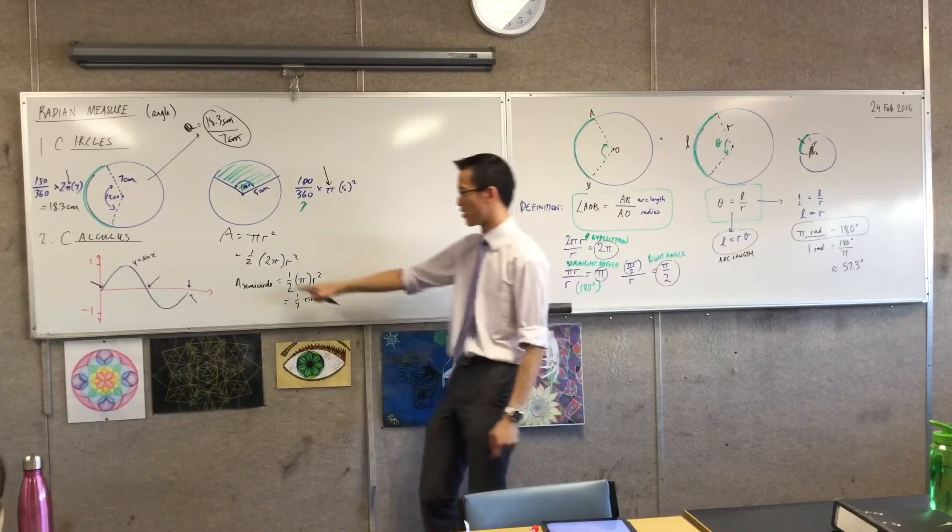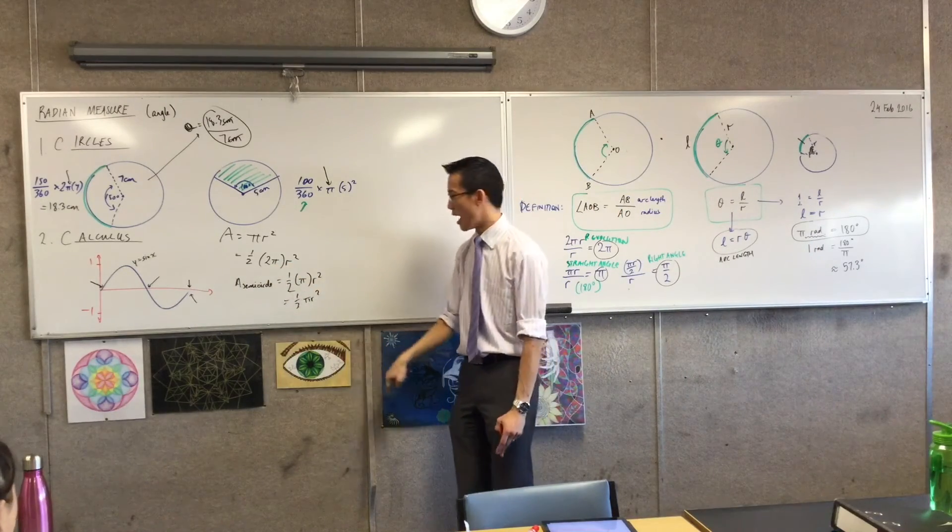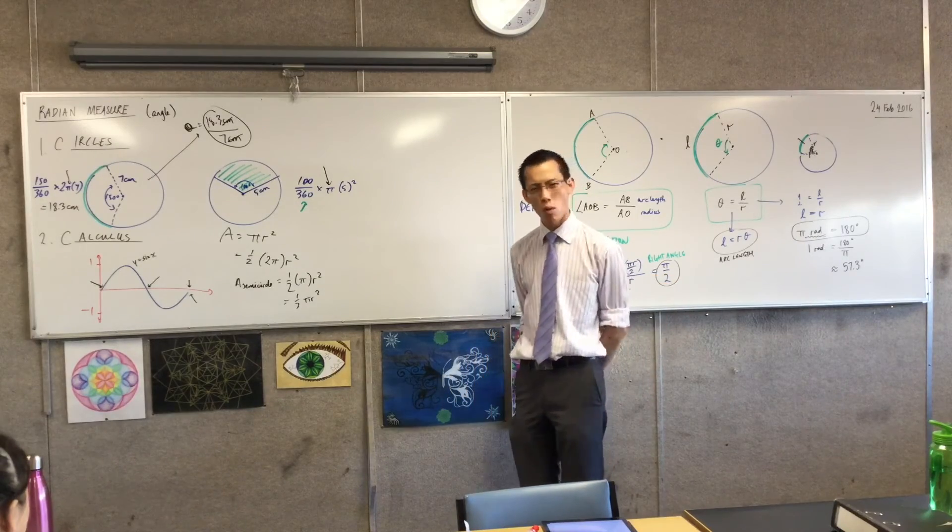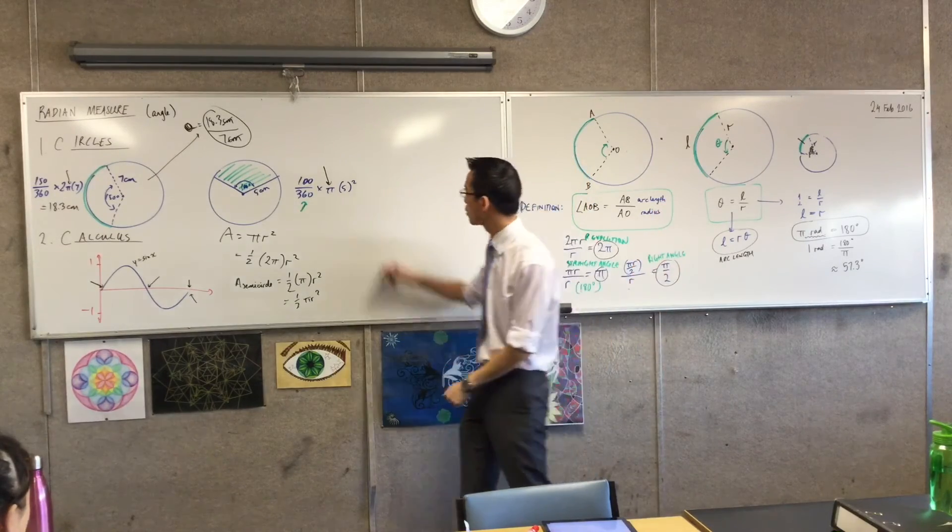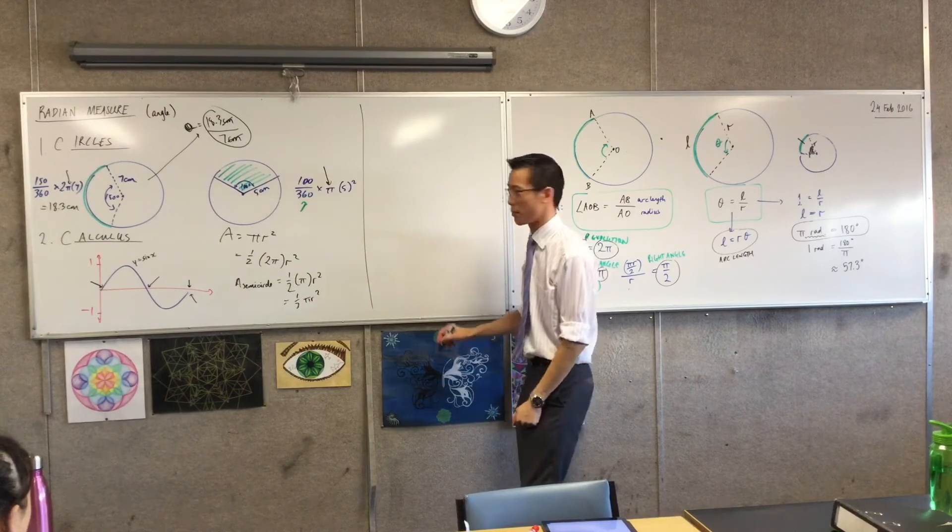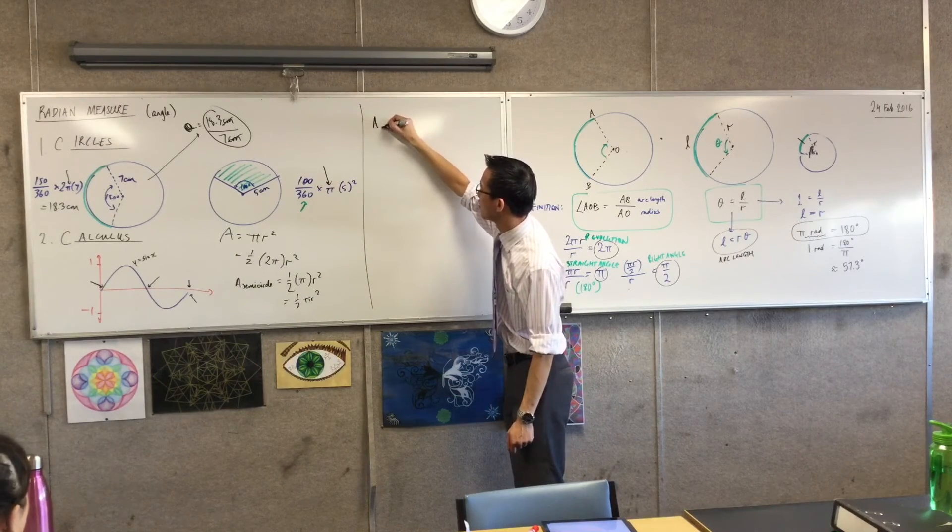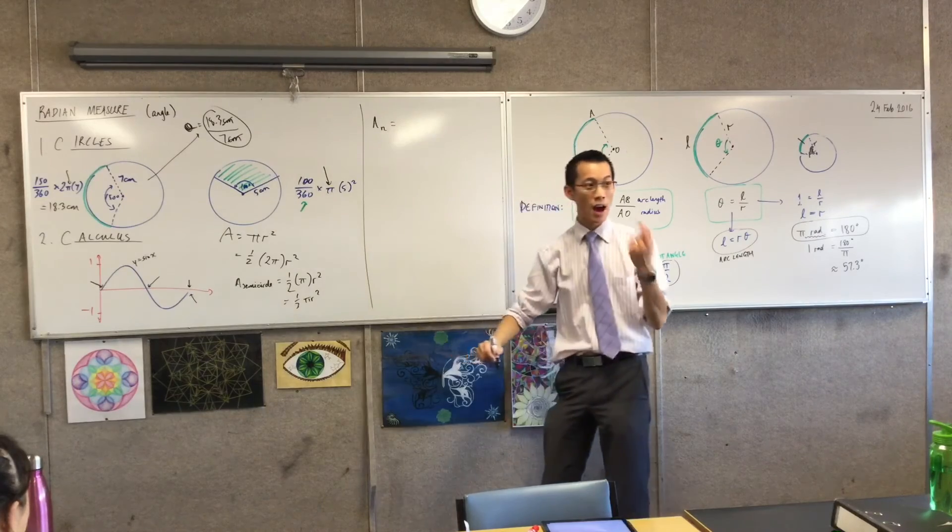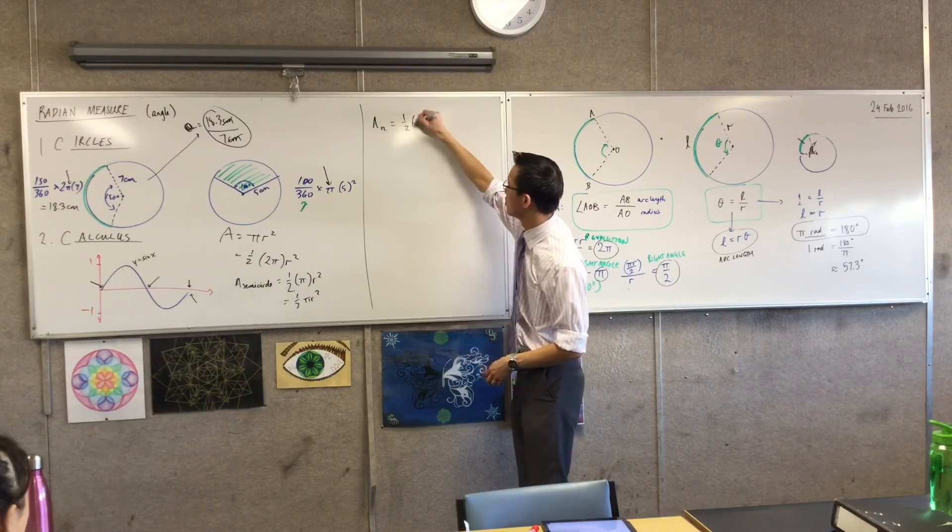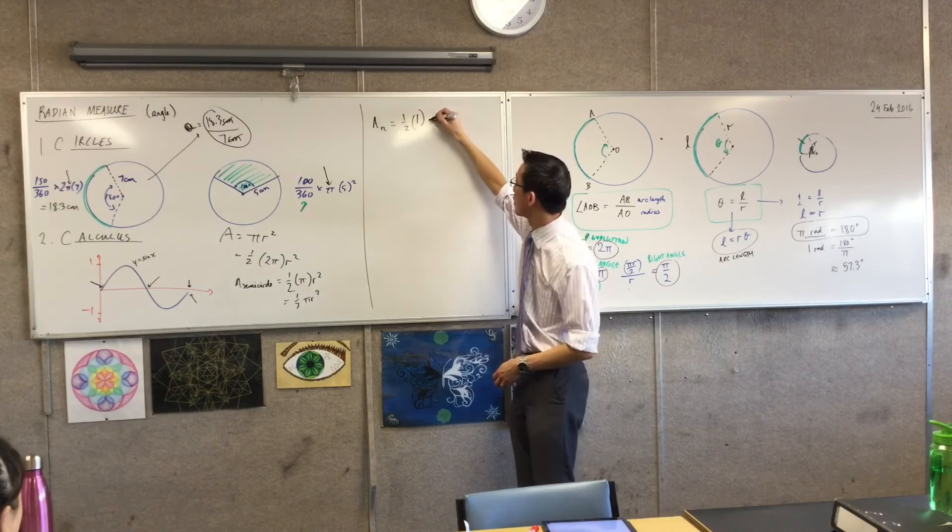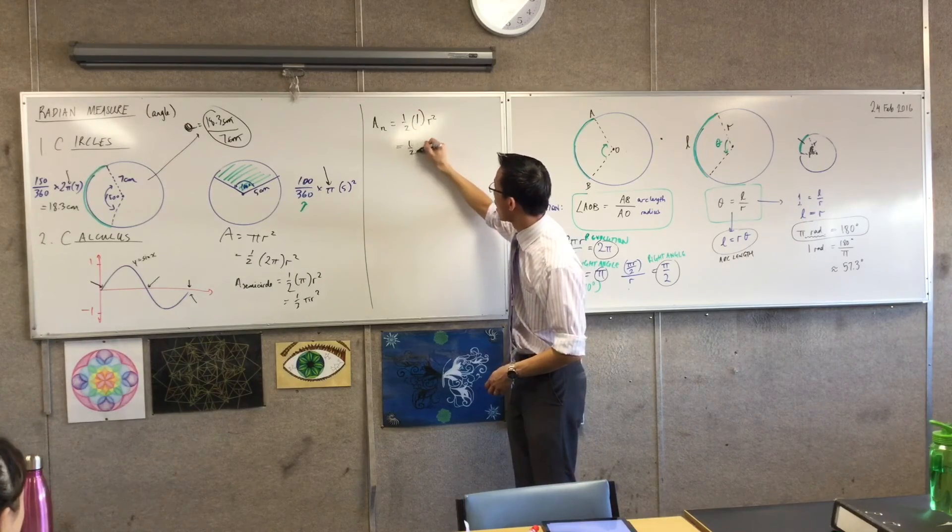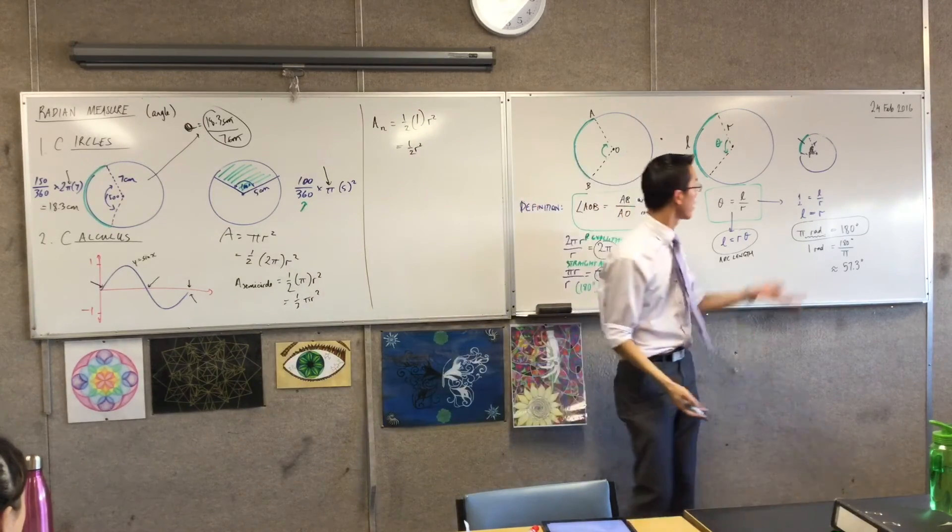But now I can pick any angle I like. I don't just have to put in 2 pi or pi. I can put in, well, what happens if I put in 1? We looked at that before, right? What would the area of that kind of thing be, right? That area will be, I'll call that area, is going to be half times, what's the angle? There's 1, right? r squared. It's half r squared, whatever that looks like. There you go.